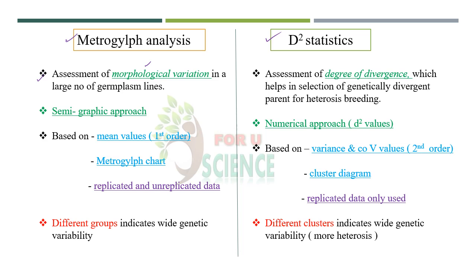In case of metroglyph analysis, assessment is based on morphological variation present in the germplasm lines. In D² statistics, the degree of divergence is the main component of measurement, and it helps in the selection of genetically divergent parents for heterosis breeding. Suppose we are crossing P1 and P2 — if they are most divergent, then the F1 will be better than both parents. Metroglyph is a semi-graphic approach, while D² statistics uses numerical D² values.